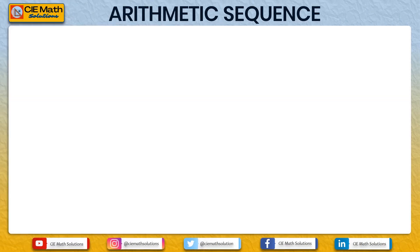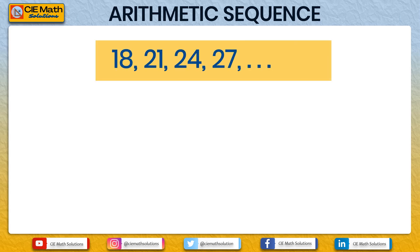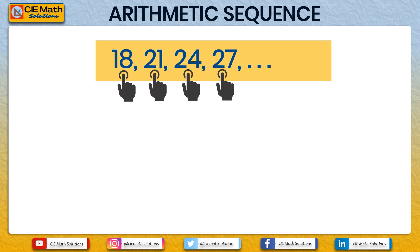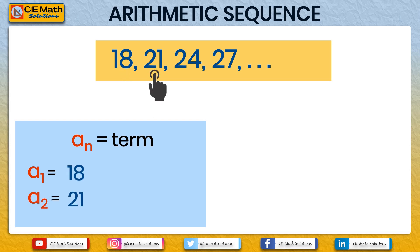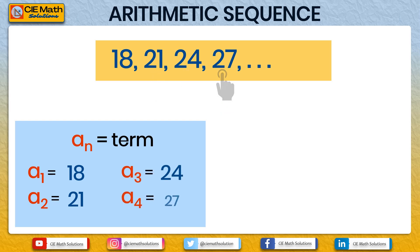Before we proceed, let us have a quick recall of the basic concepts of arithmetic sequences. Given the sequence 18, 21, 24, and 27, these are the terms of the sequence, denoted by AN. In this case, A1 is 18 (the first term), A2 is 21 (the second term), A3 is 24 (the third term), and A4 is 27 (the fourth term).